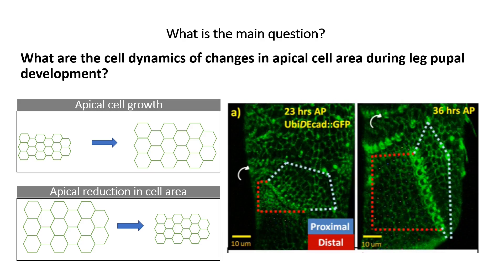The main idea of this project is to study what are the cell dynamics involving the changes in apical cell area during the leg pupal development. I will give you a time-lapse movie like this one that shows the development of the fruit fly leg, and we will study what are the changes in apical cell growth.